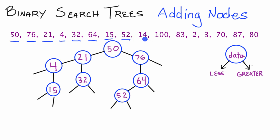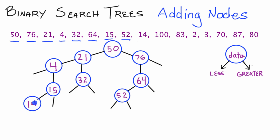Now we add 14. 14 is less than 50, we take the left pointer. 14 is less than 21, we take the left pointer again. 14 is greater than 4, so we take the right pointer. Finally, 14 is less than 15, so we add node 14 there. So here's our 14 now.